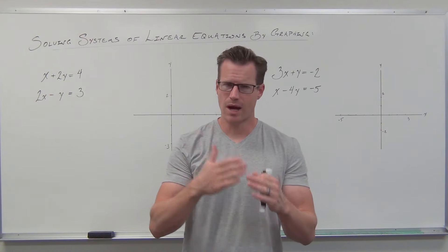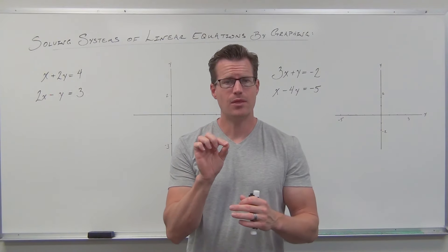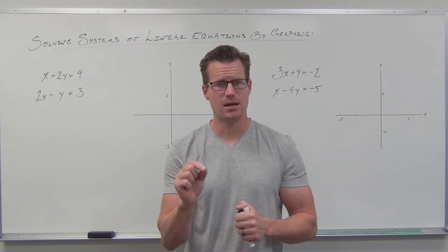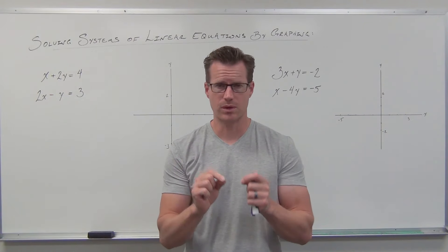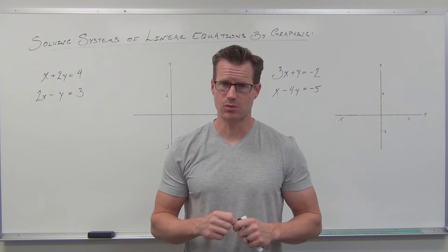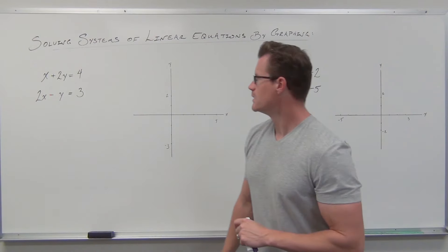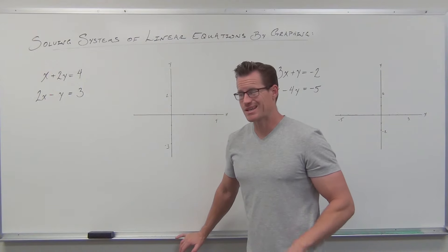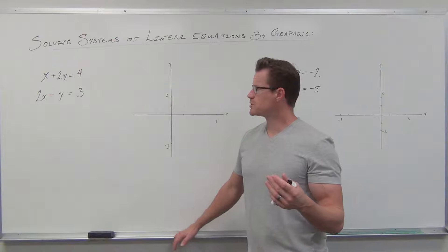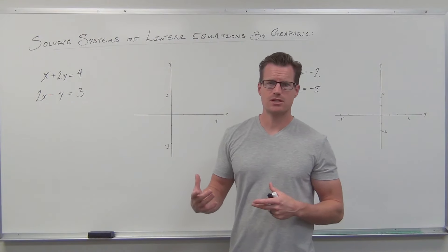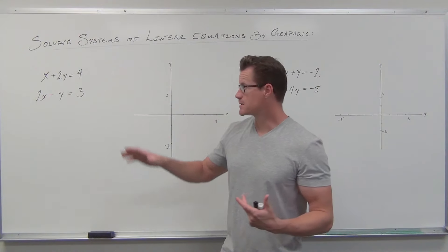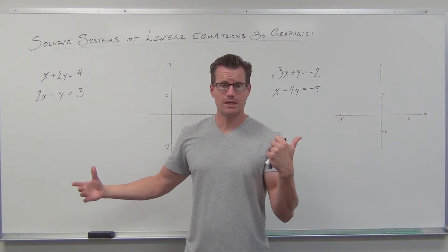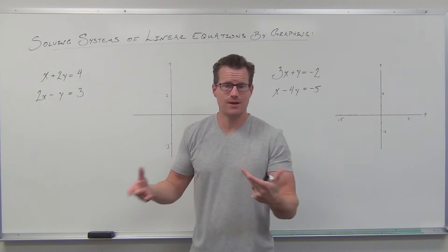The big idea is we're graphing, we're looking for the point where they intersect. And you are checking it in both equations, because that point has to satisfy both — make true math statements in both equations. If not, then you don't have the right intersection. We'll talk about the failings of that at the very end of the video. I don't care how you graph this as long as you're able to graph it. A lot of times these are set up in standard form, but you can also solve for y and use slope-intercept.